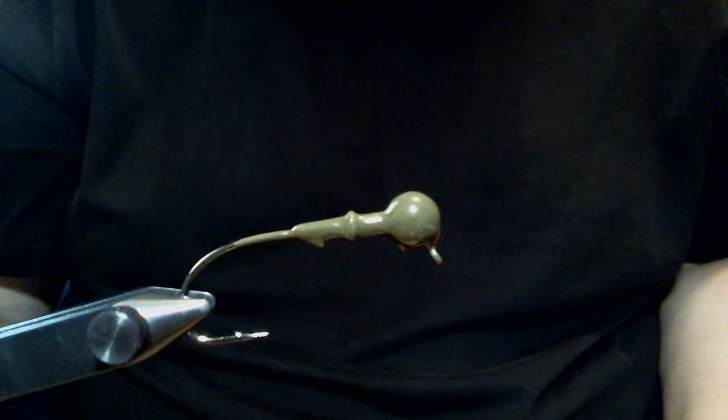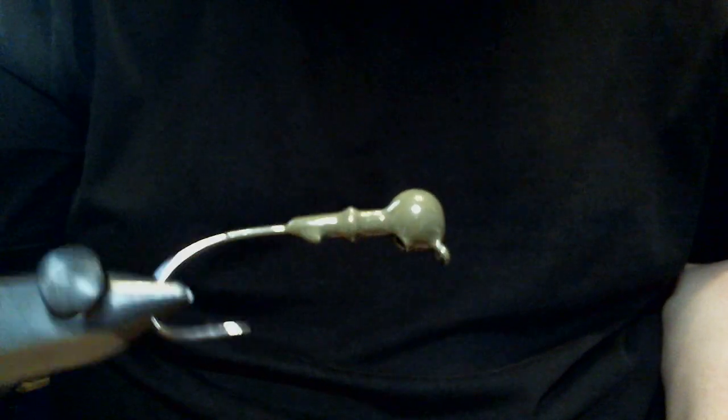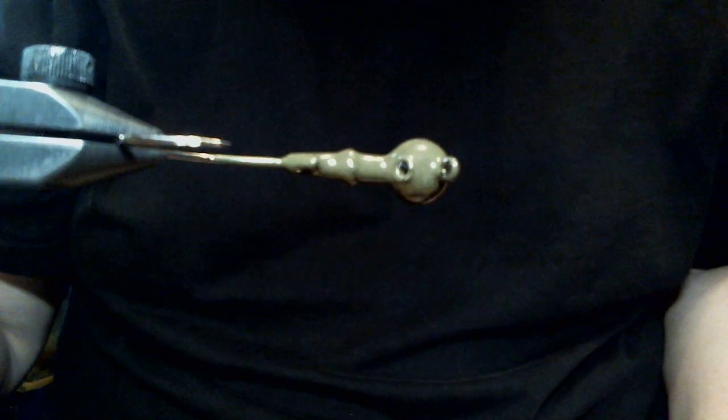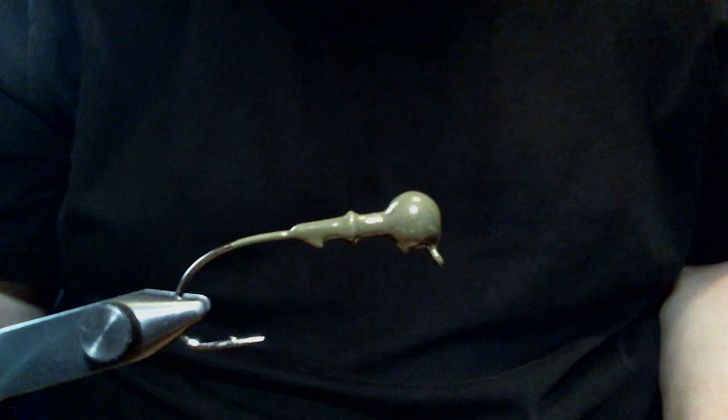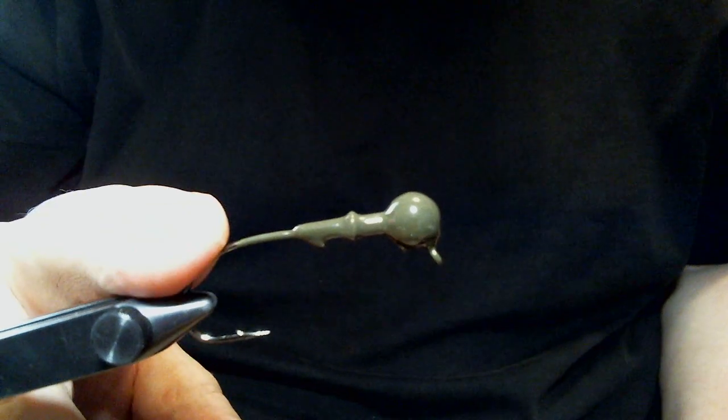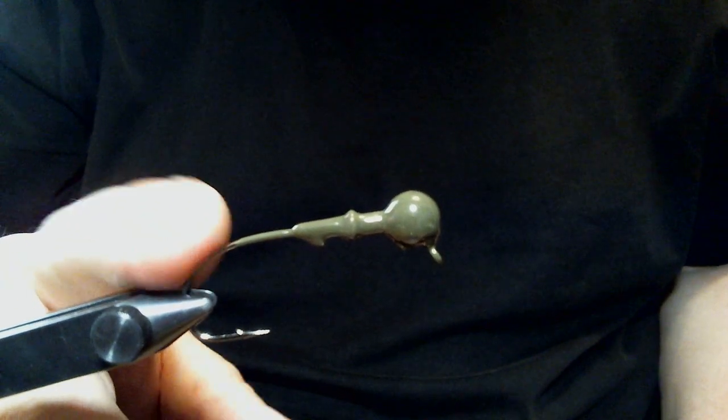In the vise, we got a 3/16th ounce round head jig. It is weedless. I have it ready for an FG12 weed guard, which is 5/64ths of an inch in diameter. The color is green pumpkin. The hook is a 2-ought Gamakatsu.